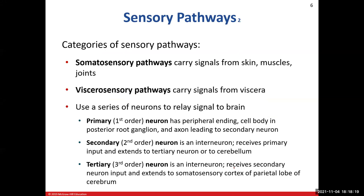Our somatosensory pathways carry signals from the skin — where a majority of receptors are — as well as muscles and joints, which includes proprioception. Visceral sensory pathways are from our organs. When dealing with sensory pathways, we talk about all the neurons involved from the origin of the stimulus all the way up to the brain. For our sensory pathways, we're going to see three neurons: a primary neuron, a secondary neuron, and a tertiary neuron.